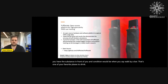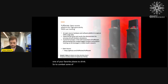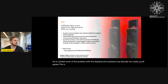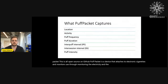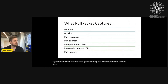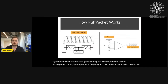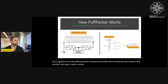To combat the disparity in substance use disorder, we created PuffPacket — all open source on GitHub. PuffPacket is a device that attaches to electronic cigarettes and monitors use through monitoring the electricity in the devices. It captures not only puffing duration, frequency, and intervals, but also location and activity. It works two ways: by monitoring voltage and by monitoring current.